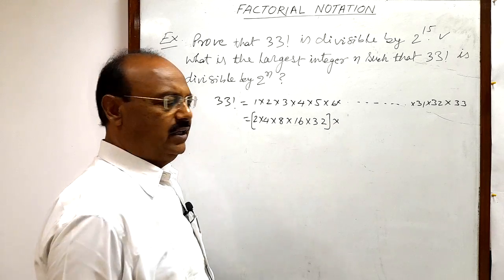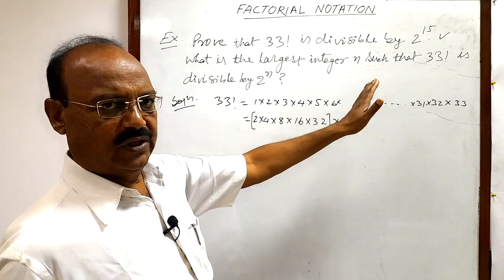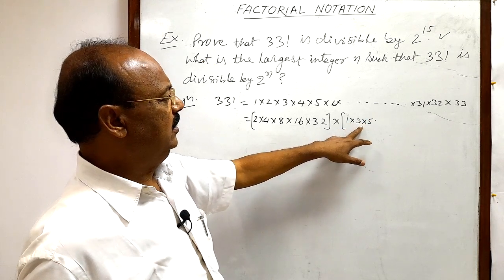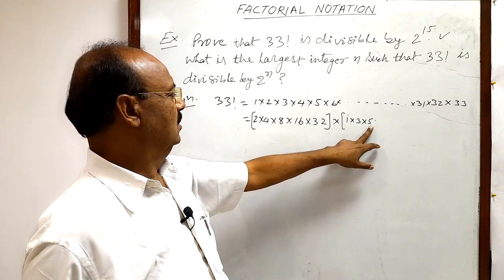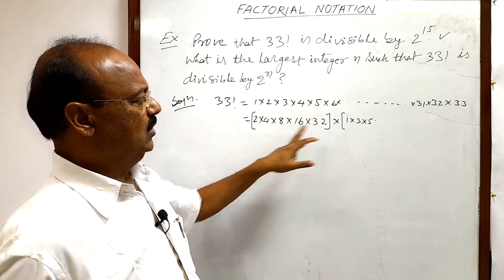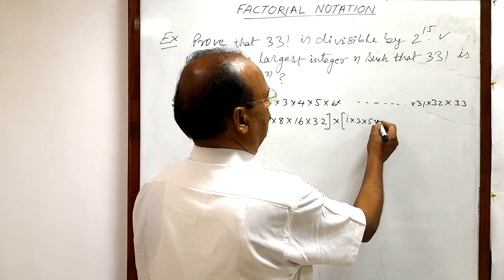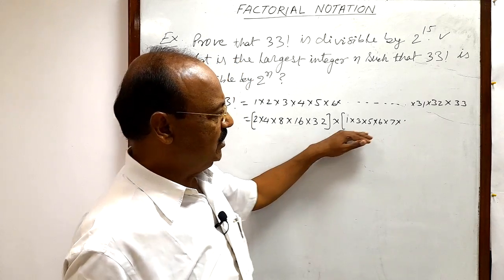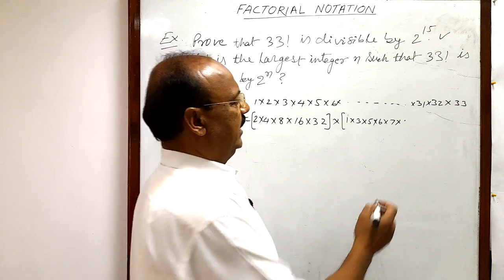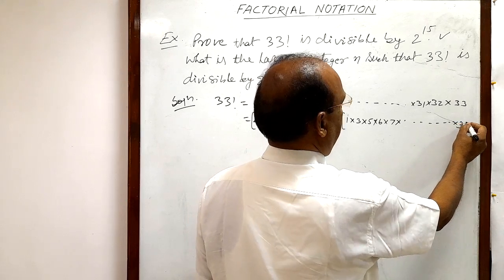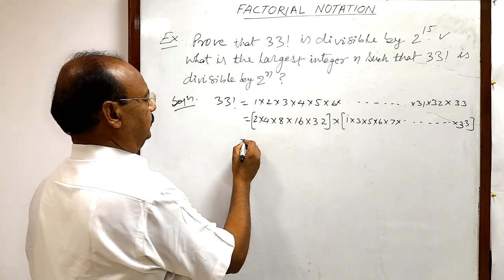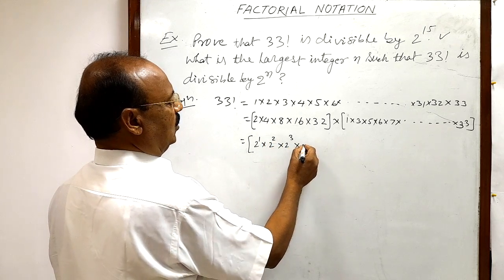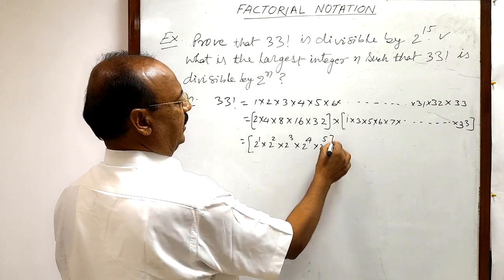In this first group we have 2, 4, 8, 16, 32. In another group we will keep the rest of the numbers: 1 into 3, then 5, then 6 into 7 — we will not write 8 here because we have already taken it. Like this, up to 33. This first group equals 2 to the power 1, into 2 squared, into 2 cubed, into 2 to the power 4, into 2 to the power 5.